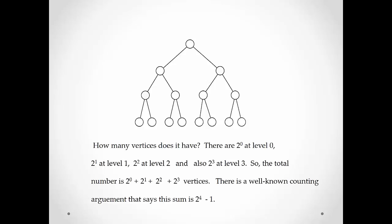Given that there are two to the one vertices at level one and two to the second at level two, we can generalize this and say there will always be two to the k at level k. In this example we have level three, so that gives us a total of 2 plus 2 to the 1 plus 2 to the 2 plus 2 to the 3. Notice that we have level three because we start counting at level zero. The sum of these powers of two gives, by a well-known counting argument, two to the fourth minus one.